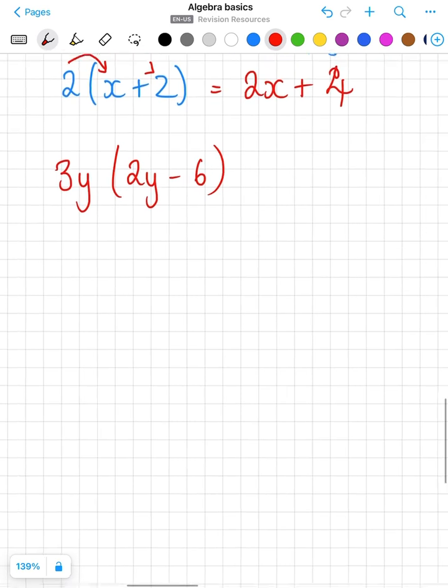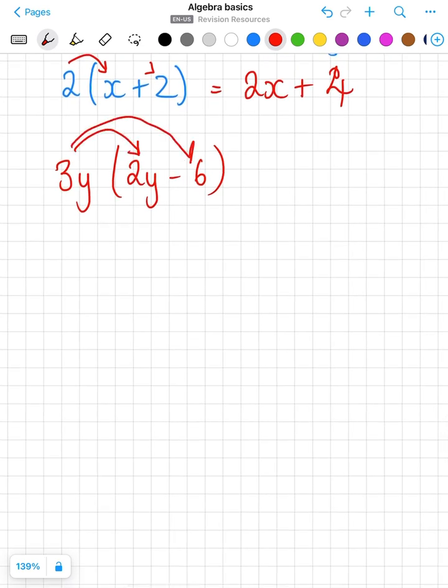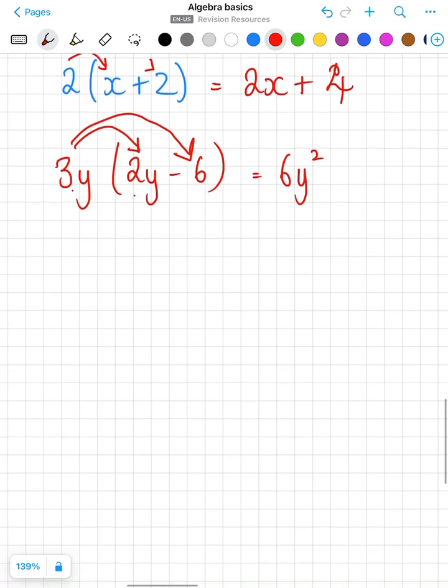Again multiplying out this bracket, we times out what's on the outside with what's on the inside. So 3y times 2y, so 3 times 2 is 6, y times y is y squared. 3y times minus 6, that's 3 times minus 6 which is minus 18y.